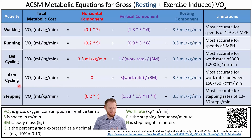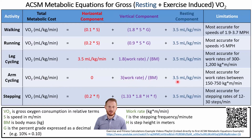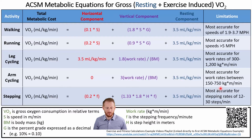For the arm cycling equation, it's fairly similar to leg cycling. VO2 equals 0 for the horizontal component (arm cycling has no horizontal component, so it's excluded) plus 3 times the work rate divided by body mass, plus the resting component of 3.5. The accurate range for this equation is 150 to 750 kg·m/min for the work rate.